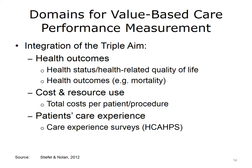Measuring the success of efforts to achieve the triple aim requires quantifiable data on various care components. There is a need to establish a system of metrics and measurements that assess progress in achieving the various aims. Some of the needed data include health outcomes important to populations — such as measures of health status, health-related quality of life, and mortality — data on costs of care and resource use, such as total cost per patient per procedure, and measures of patients' perception of their care experience. Care experience surveys, such as HCAHPS, have been used to obtain these measures.